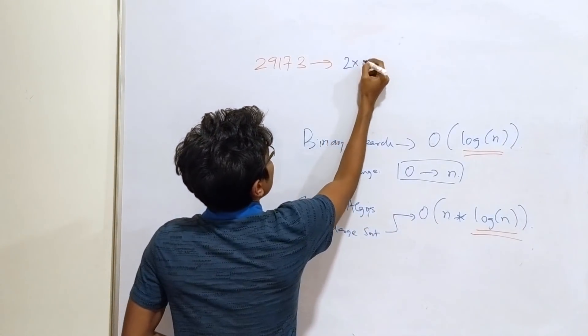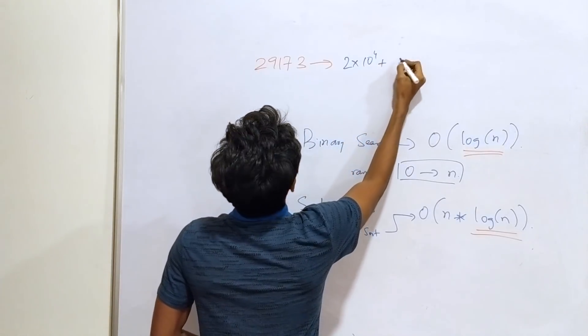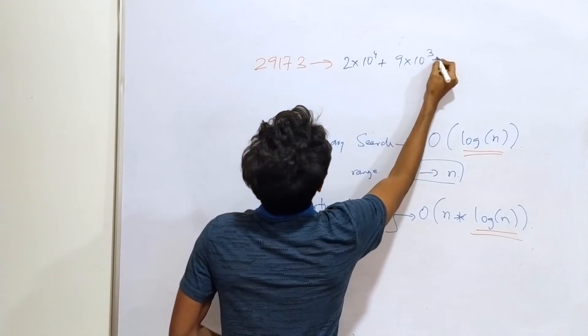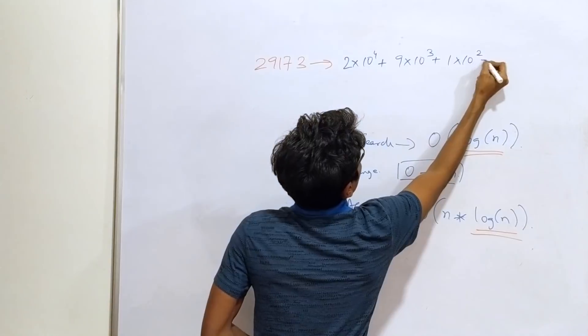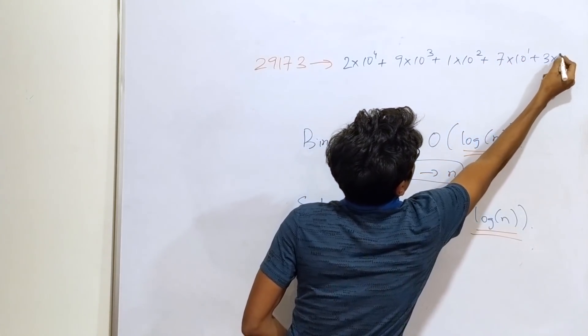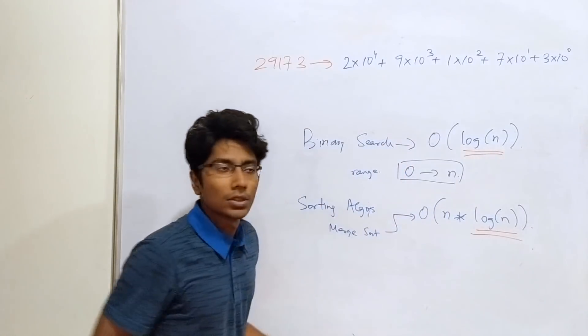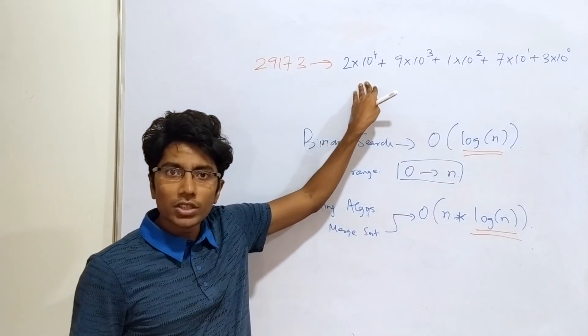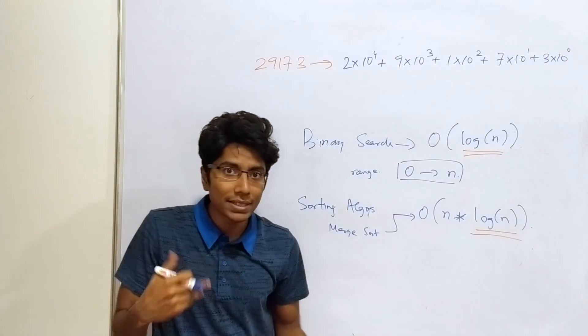What this is, is 2 into 10 raised to the power 4 plus 9 into 10 raised to the power 3 plus 1 into 10 raised to the power 2 plus 7 into 10 raised to the power 1 plus 3 into 10 raised to the power 0. So the implicit information in this is actually the base, the base that we are using.